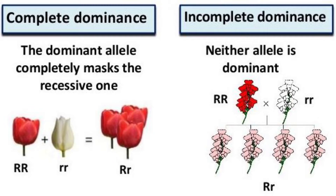In incomplete dominance, neither allele is dominant, so the phenotype of the heterozygote is an intermediate of the two homozygous phenotypes. Plants with two big R alleles have red flowers, plants with two little r alleles have white flowers, and heterozygotes with big R and little r have pink flowers. Pink is an intermediate — it's not the phenotype of either homozygous plant.